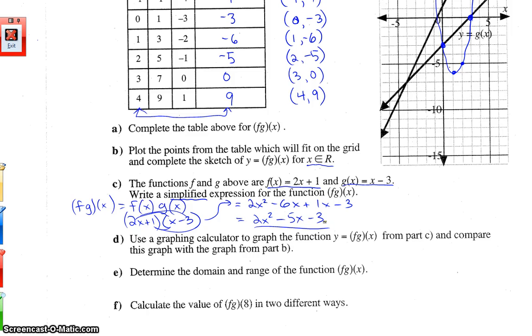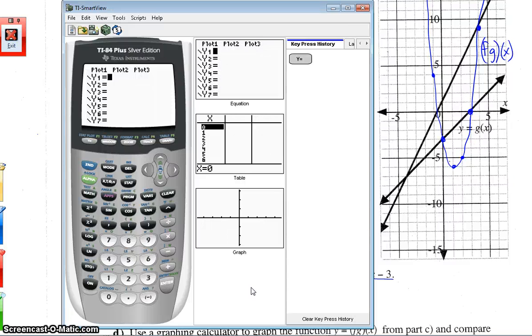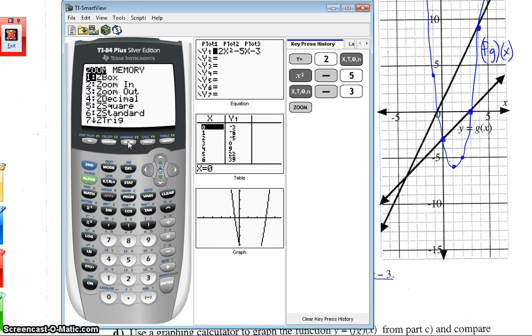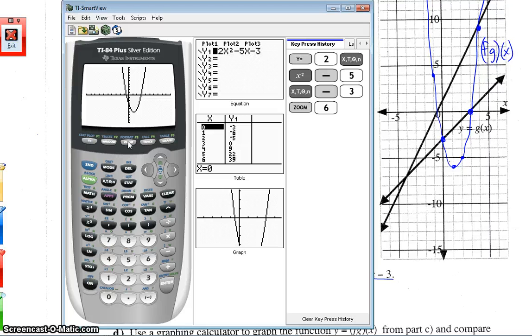Part D, use a graph calculator to graph the function fg(x) from part C and compare this graph with the graph from part B. So we are going to need our graphing calculators. And we're going to be putting this function here, 2x squared minus 5x minus 3, into our graphing calculator. So grab your calculator. I'll grab mine. So in y equals, we are going to put in 2x squared, I believe it was. So 2x squared minus 5x minus 3. And we're going to probably set our windows to zoom standard, number 6. And there we go. There's our graph.